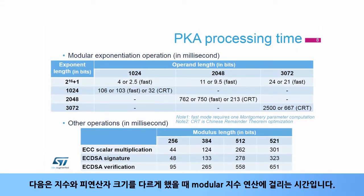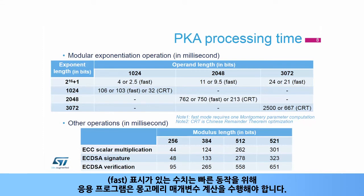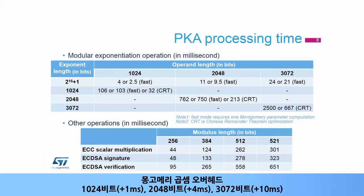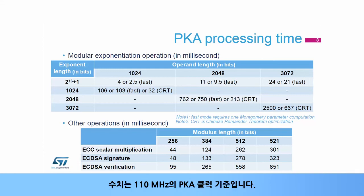Here are the modular exponentiation processing times using different exponent and operand sizes. Figures with the FAST indication require the application to perform a Montgomery parameter computation beforehand. The Montgomery parameter can be reused for several computations in a row, making overall operations more efficient if repeated many times. Montgomery multiplication overhead: 1024-bit adds ~1 ms, 2048-bit adds ~4 ms, 3072-bit adds ~10 ms. Figures are computed for a PKA clock of 110 MHz.